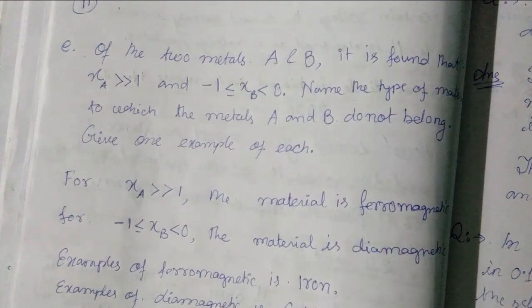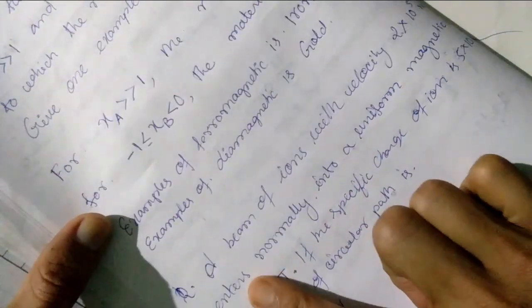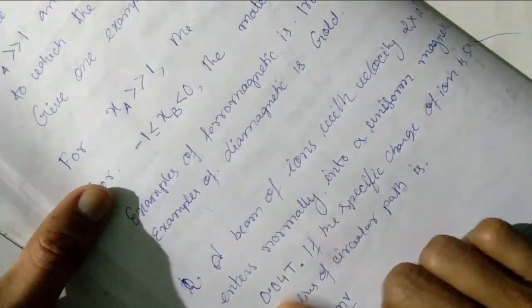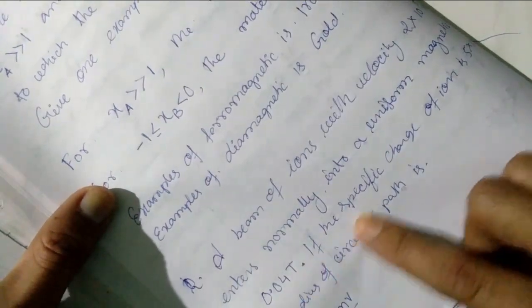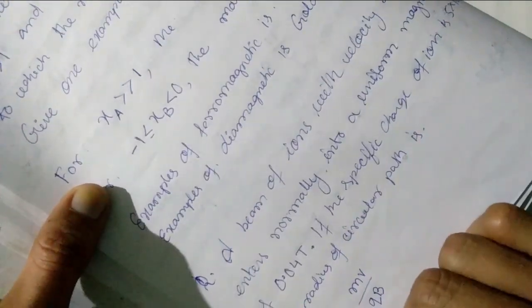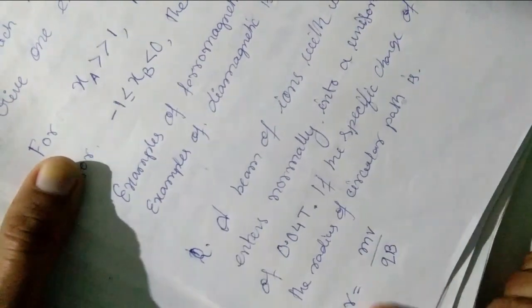So a beam of ions with velocity 2 into 10 to the power 5 enters normally into a uniform magnetic field of 0.04 tesla. If the specific charge of the ion is 5 into 10 to the power 7 coulomb, then find the radius of the circular path. I will calculate it.